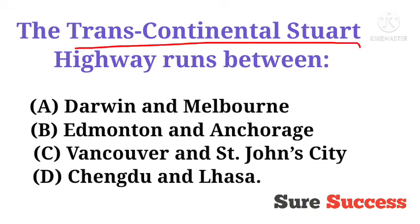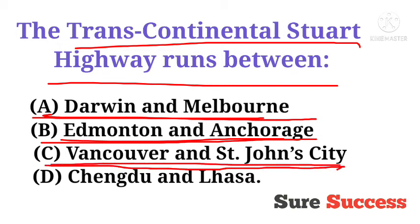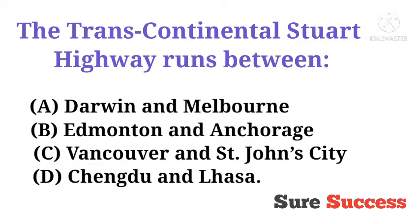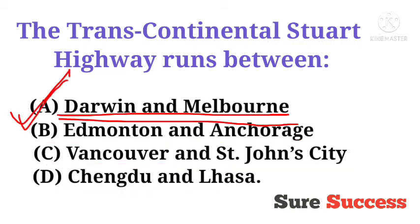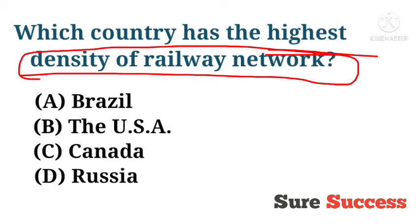The Transcontinental Stuart Highway runs between which places? Options are Darwin and Melbourne, Edmonton and Anchorage, Vancouver and St. John City, and Chengdu and Russia. The correct answer is Darwin and Melbourne.